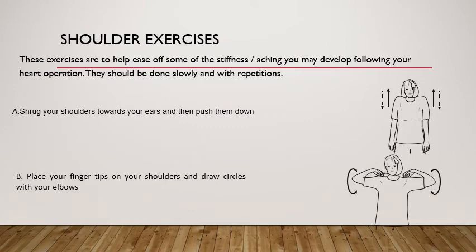Shoulder exercises help ease stiffness and aching that may develop following heart surgery, and should be done slowly with repetitions. First is shoulder shrugs: shrug shoulders towards the ears and then push down. Next, place your fingertips on your shoulders and draw circles with your elbows. Pictures are provided for reference.